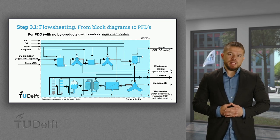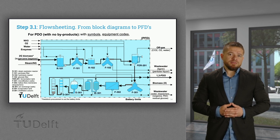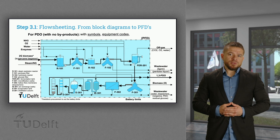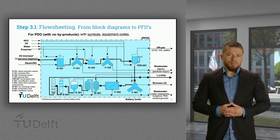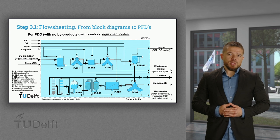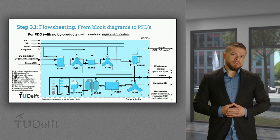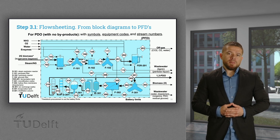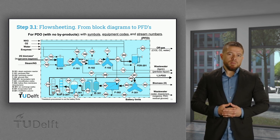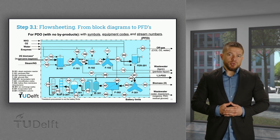In addition to the symbols, the PFD also includes equipment codes for clear identification of specific process units. The code is a combination of letters and three numbers. Letters refer to the process or operation, like R for reactor. The first number refers to the process section — pretreatment is 1, fermentation is 2, and downstream process is 3. The next two numbers refer to the sequence in which one type of process unit is present in the process, for example, the two reactors in section 1. The PFD also includes stream codes, where the first number refers to the process section and the next two numbers refer to the sequence of the material flows. Stream numbers are used in combination with mass flow tables to quickly check the components present in each stream.